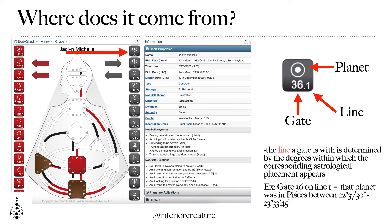This basically comes from our astrological natal chart. The gate and the line come from the corresponding degree band in which that astrological placement appears. For example, I've always known my sun is in Pisces. Because it's at a specific degree band — between 22 and 23 degrees — that correlates in human design language to gate 36 on line one.